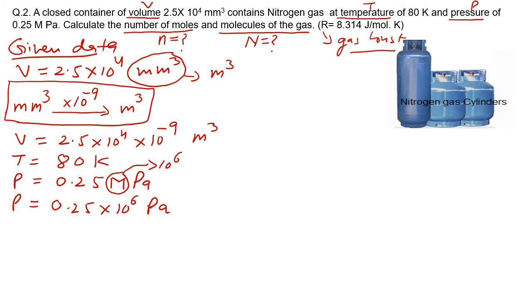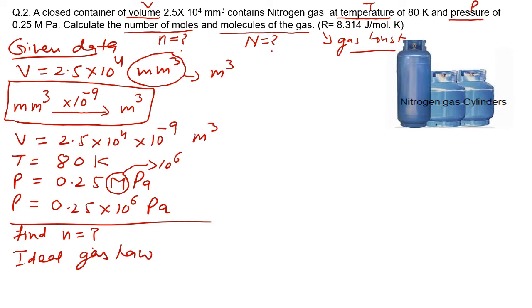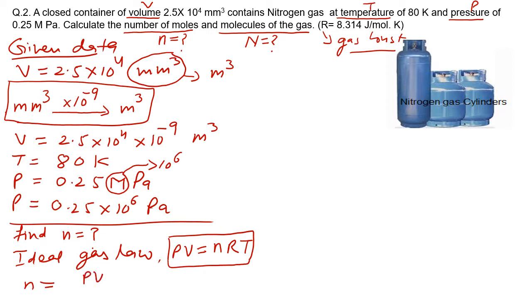Based on the given data, we now find the number of moles using the ideal gas law: PV = nRT. Rearranging, n = PV/(RT). This is the formula to find the value of n (number of moles).